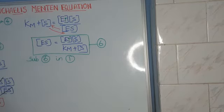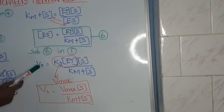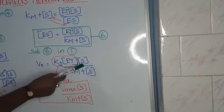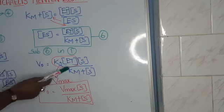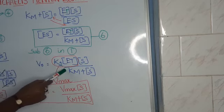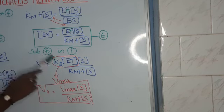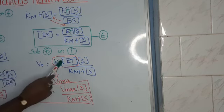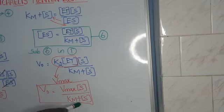We substitute the sixth equation into the first equation. The initial velocity V0 = K2 × ET × [S] / (Km + [S]). Now, K2 × ET is represented as Vmax, because when all the total enzyme is participating in the product formation step, the velocity of the reaction is maximum. Therefore, V0 = Vmax × [S] / (Km + [S]). This is the Michaelis-Menten equation.